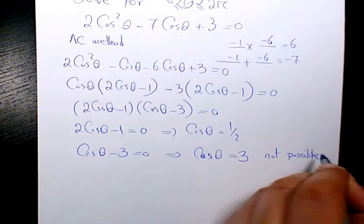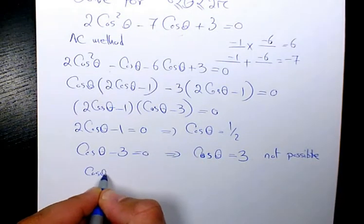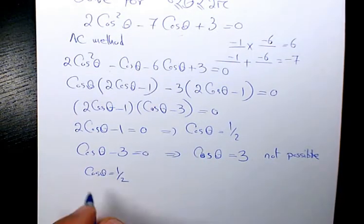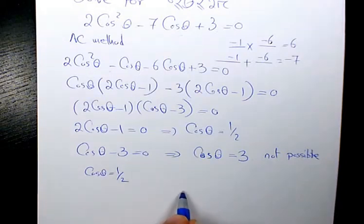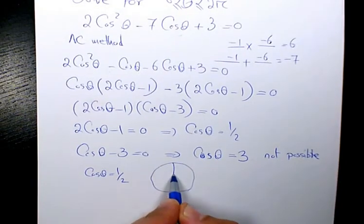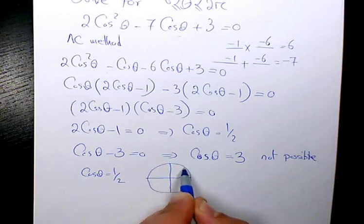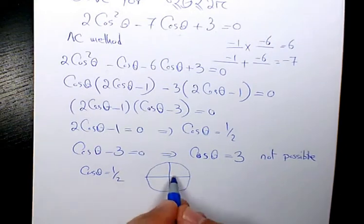But what about this one? Cosine theta equals to 1 over 2. And we know cosine theta is positive in quadrant 1 and quadrant 4. Based on the cast rule, C-A-S-T, cosine is positive in quadrant 1 and quadrant 4. So it's going to be something like that.